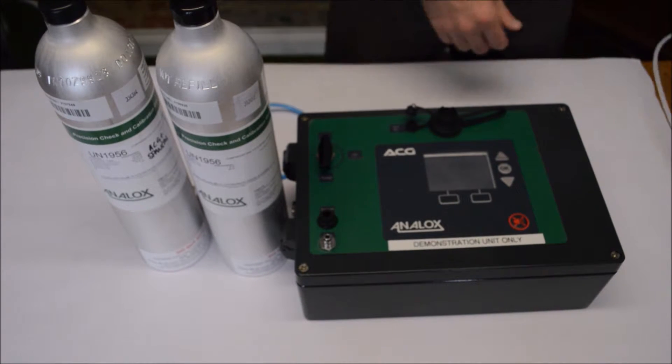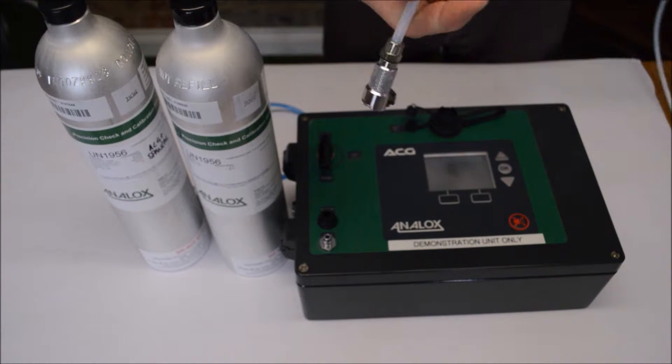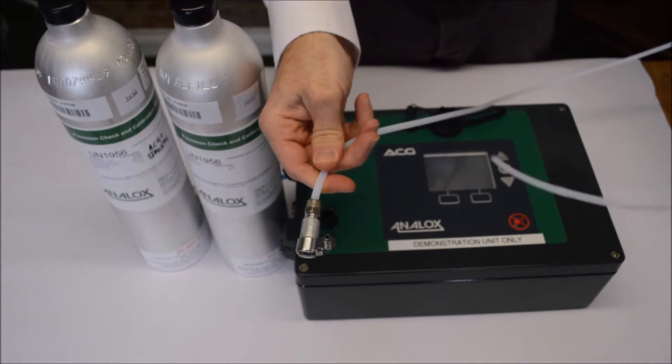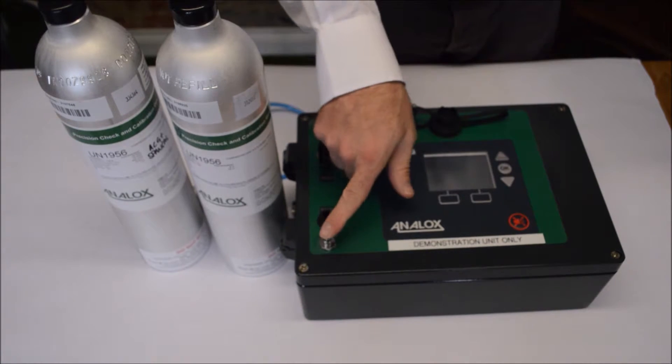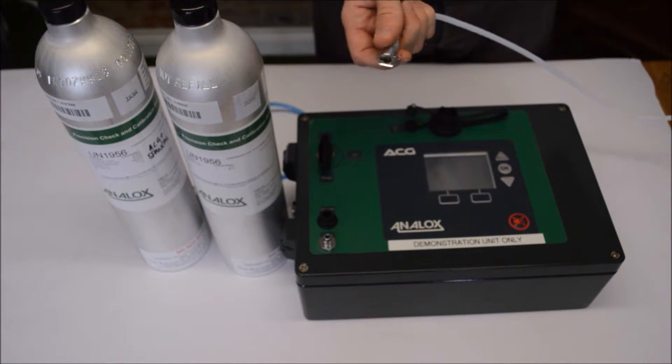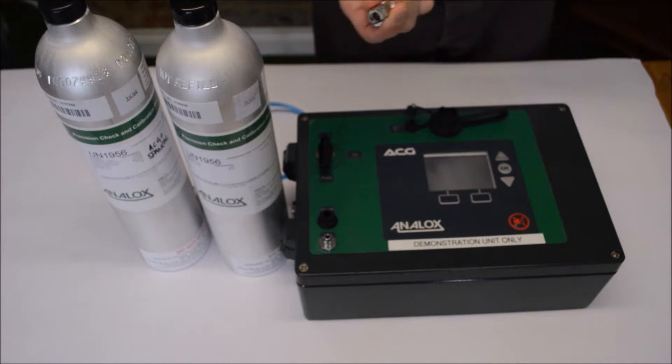We also need our supplied length of PTFE pipe with the Linktech connector, which allows you to connect it onto the ACG unit right here. That's the equipment we need for the calibration and we'll now progress onto the calibration of the unit via the screens.